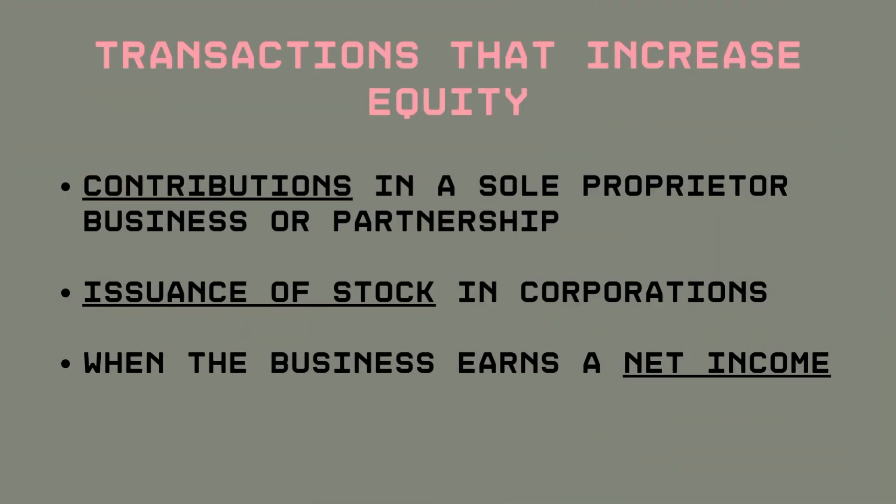Now let's break down the transactions that change equity balance. There are only two types of transactions: those that increase equity, and those that decrease it. The transactions that increase equity are contributions in a sole proprietor business or partnership, issuance of stock in corporations, and when the business earns a net income. Owner's investment involves direct contributions from the business owners, found in sole proprietor or partnership models. If the entity is a corporation, they issue stock to raise capital by selling shares to public or private investors, reflecting an increase in the equity section of the balance sheet.